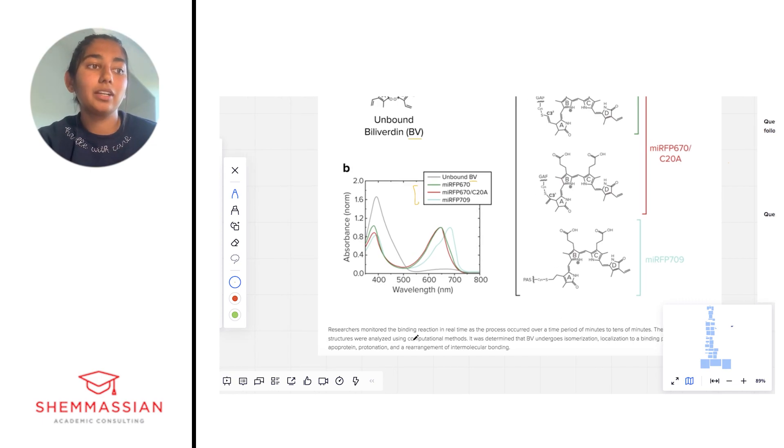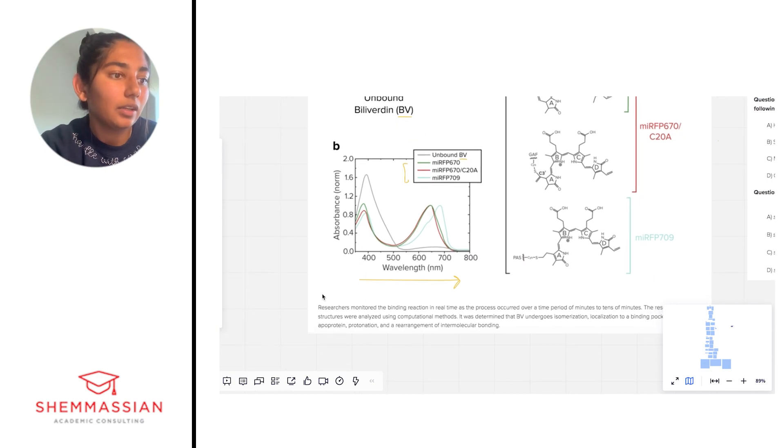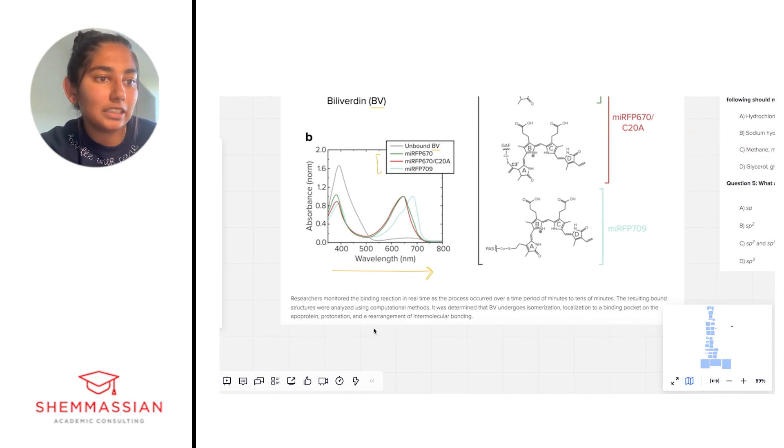Just looking at this graph, I'm not going to look too deeply into the patterns, but on the x-axis we have wavelength, and we know that different wavelengths mean different frequencies of light as well. As we increase wavelength, we decrease frequency. We see absorbance on the y-axis, so there are some peaks here in wavelength. We notice that the unbound has a much greater peak than the other MIRFPs.